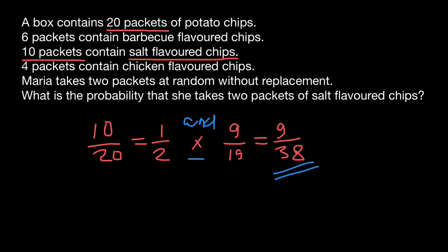Now, when do we have to add probabilities? We add probabilities when we connect two probabilities with the word 'or'. For example, if our question would be: what is the probability for Maria to choose one packet of salt flavored chips or, for example, a packet of chicken flavored chips? In this case, the probability is going to be 10 out of 20 plus four out of 20, or we can also say one half plus one fifth. When we connect two probabilities with the word 'and', we multiply them. When we connect them with the word 'or', we add them.